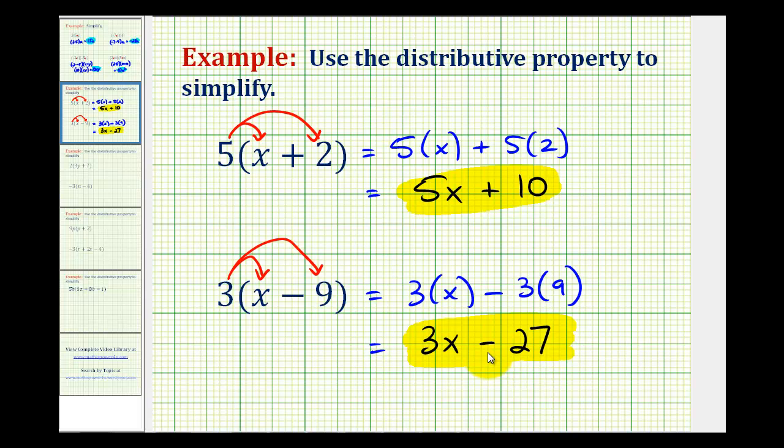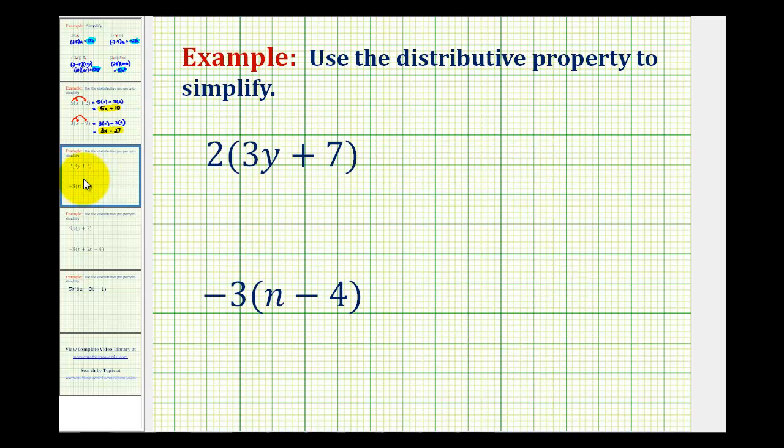Let's go and take a look at two more examples. Here we have two times the quantity three y plus seven, so we'll distribute the two, so we'll have two times three y plus two times seven.